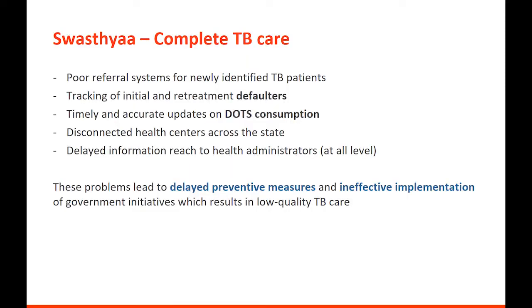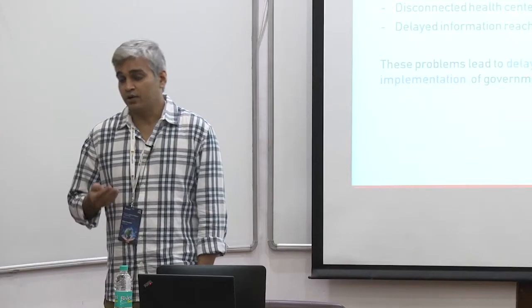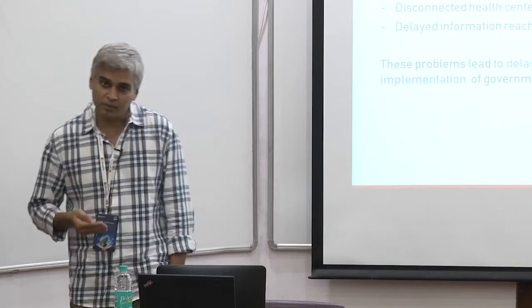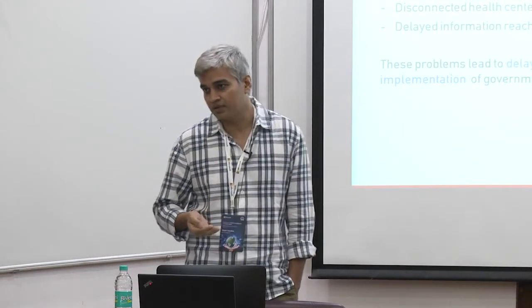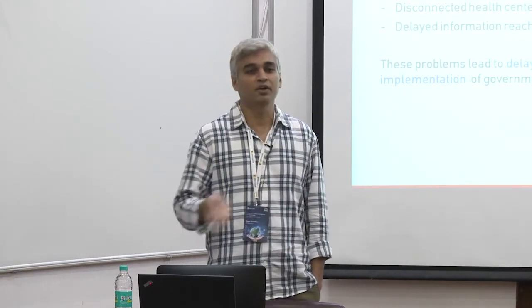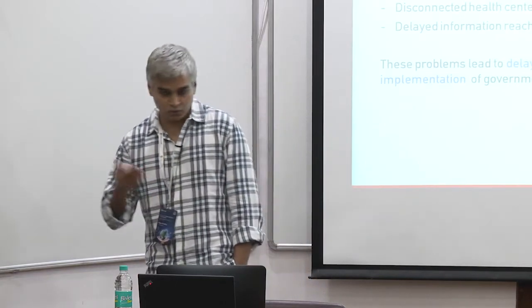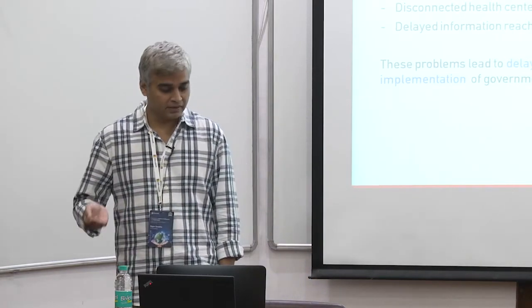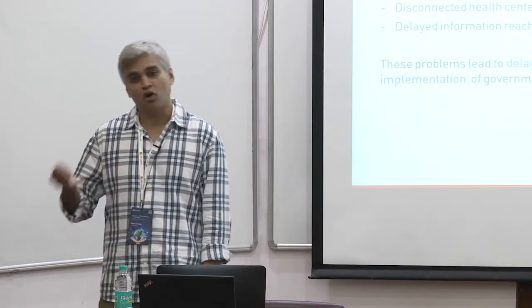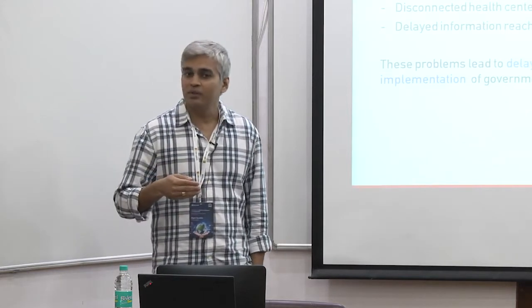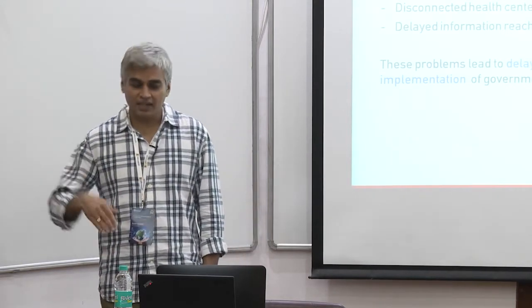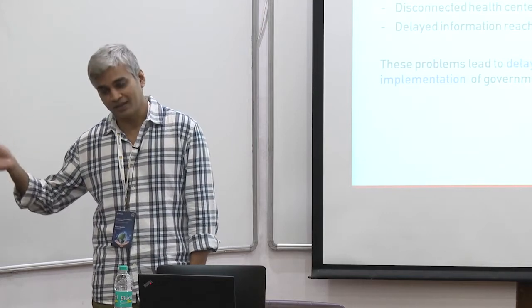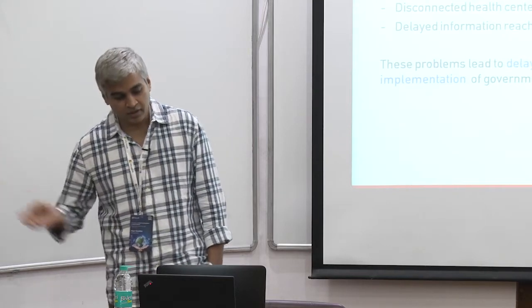Second is tracking of initial and re-treatment defaulters. If I am identified as a TB patient, one scenario is that I don't even enroll in the government schemes — how do we track that? Eventually the person reaches a very serious stage of tuberculosis. Or I start consuming medicines but don't complete the course, moving from category one to category two or three patients.